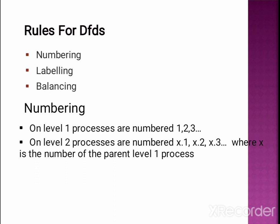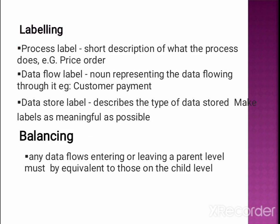Rules for DFD include Numbering, Labeling, and Balancing. For numbering: Level 1 processes are numbered 1, 2, 3; Level 2 processes are numbered x.1, x.2, etc. For labeling: process labels are a short description of what the process does; data flow labels are nouns representing the data flow; and data store labels describe the type of data store.